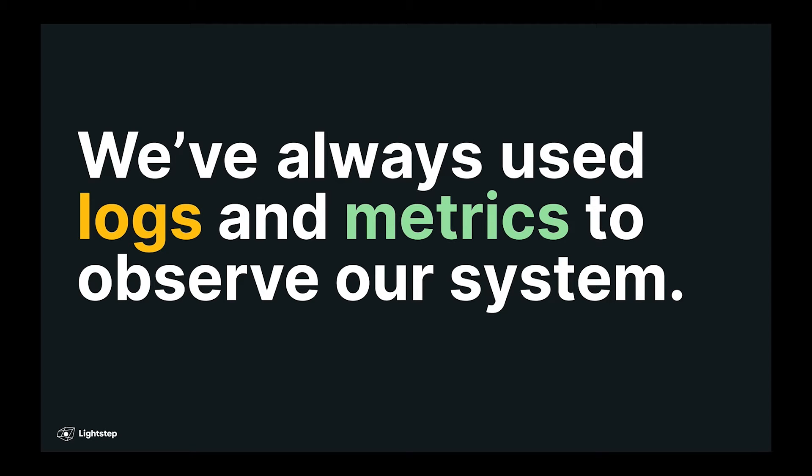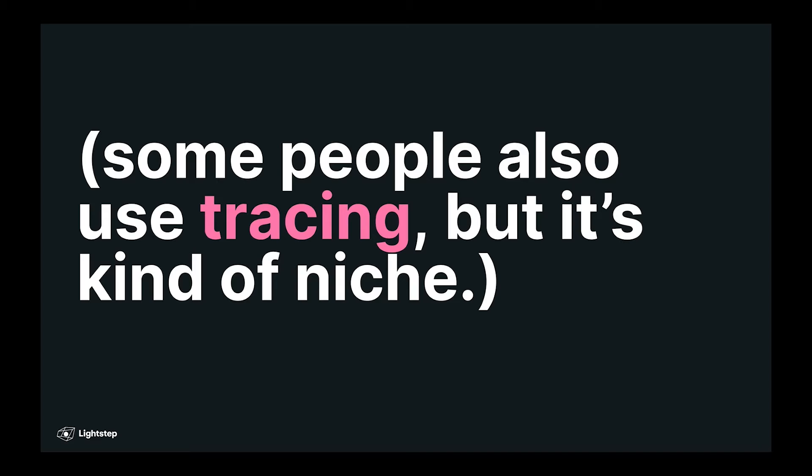Traditionally, observability has meant logs and metrics. We all know what those mean. And some people have also used tracing, but it's often seen as sort of a niche tool for measuring latency, involving a lot of sampling. It's kind of weird.